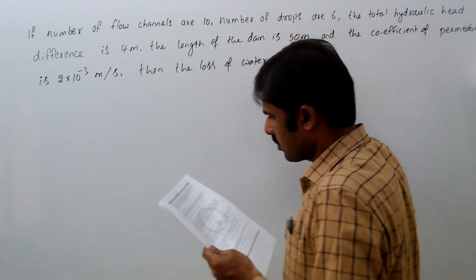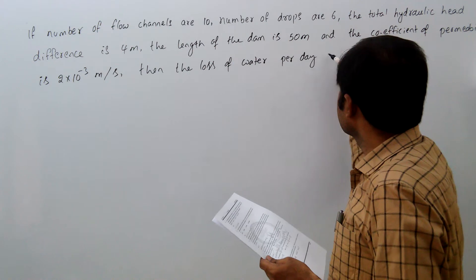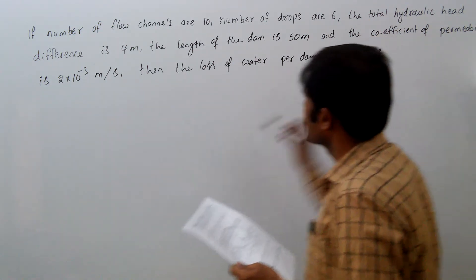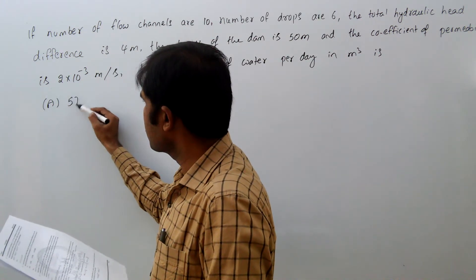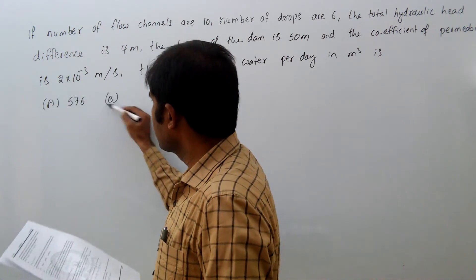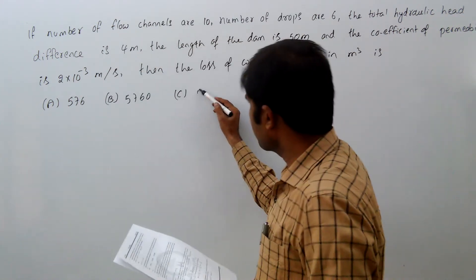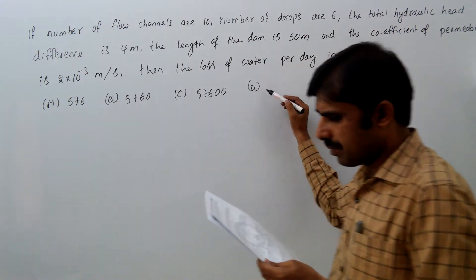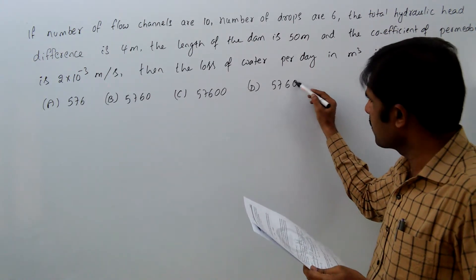per day in meter cube is: option a) 576, option b) 5760, option c) 57600, option d) 576000.